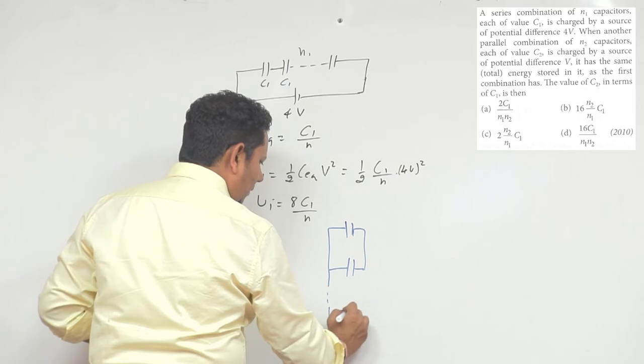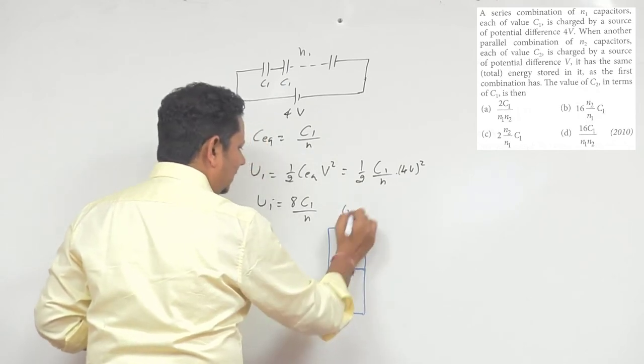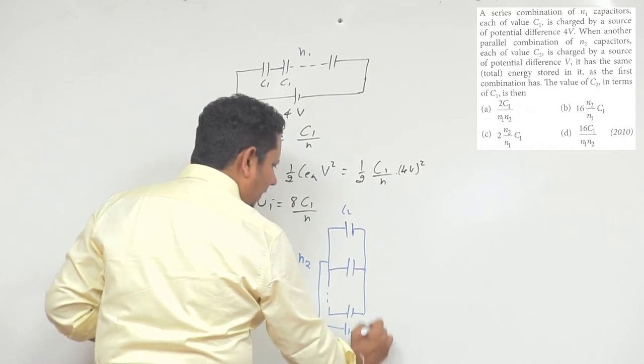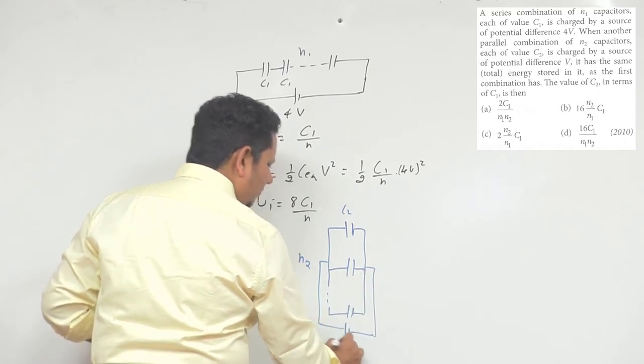Now for the second case, we have N2 capacitors, each of value C2, connected to voltage V.